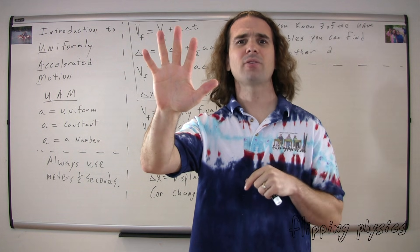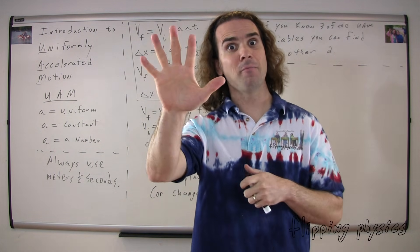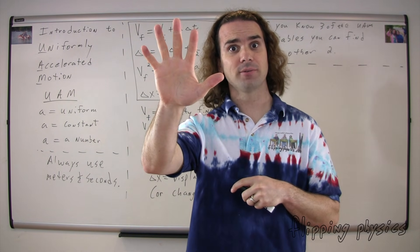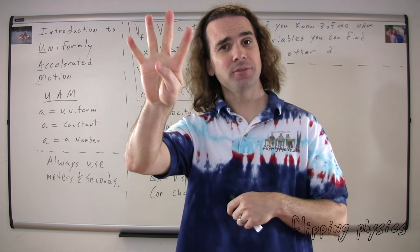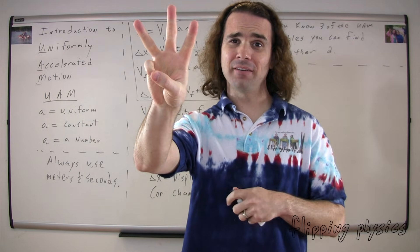Okay, let's try that again. Class, there are how many uniformly accelerated motion variables? Five. Five. And there are how many UAM equations? Four. And if you know how many of the variables? Three. You can figure out the other... Two.